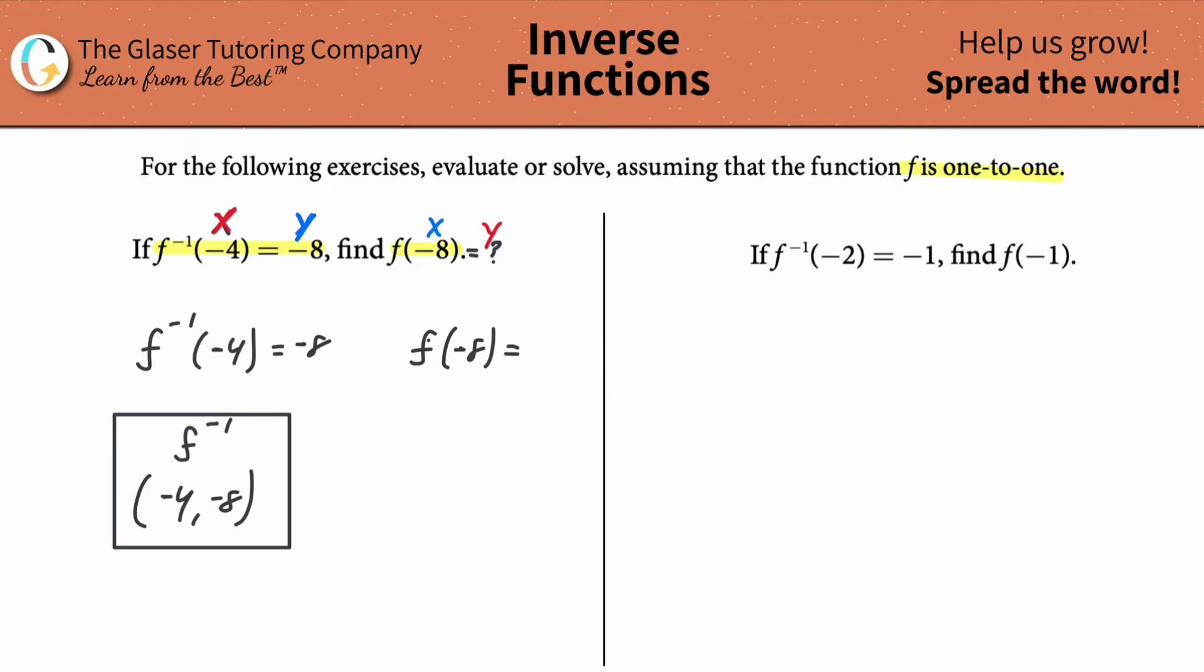Now if you know that, and they also told you it's one-to-one, so that's kind of important, meaning that only one X has exactly one Y. The Y value here now became the X, so that means that the X value must become the new Y. So the answer is going to be negative 4. That's it. Negative 4.